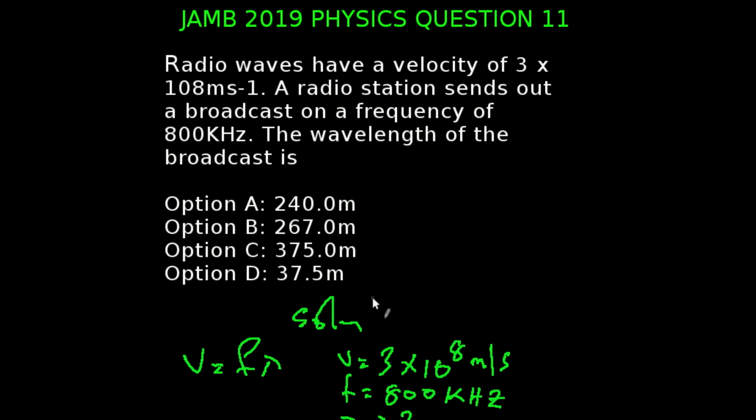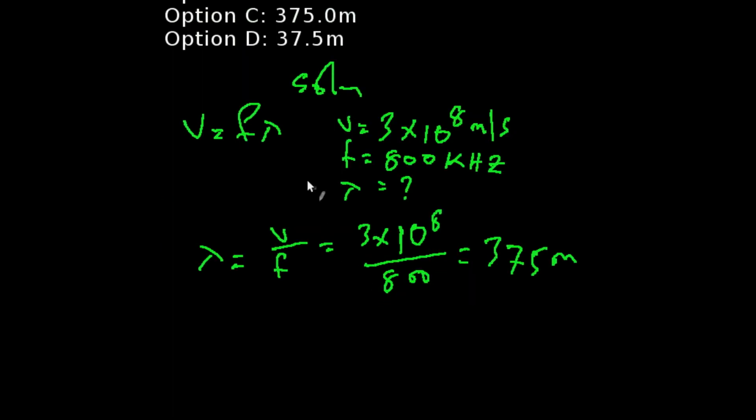In this question we are expected to calculate the wavelength. We have velocity to be frequency multiplied by wavelength, so our wavelength is going to be velocity over frequency. We have velocity to be 3 times 10 to the power of 8 meters per second and our frequency to be 800 kilohertz.